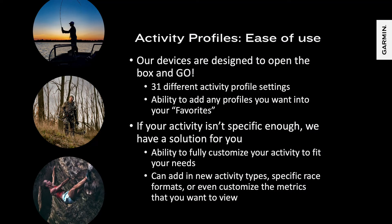Our activity profiles are tested by athletes and built for our users so that they are ready to go right out of the box. The idea is to not provide data overload, but to focus on what is important. We currently have 31 different activity profiles that we can offer, with many more on the way. Users have the ability to add activities to their list of favorites, where they can quickly start an activity. But what if your activity isn't listed, or you want to change the data fields, or build a very specific activity for a one-time event? We have a solution — the ability to completely customize your own activities, data fields within profiles, or even set up a specific event such as a race format built for your needs.